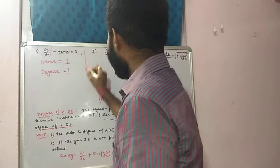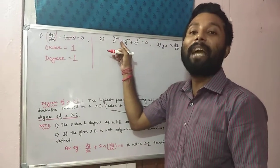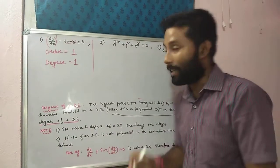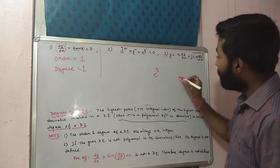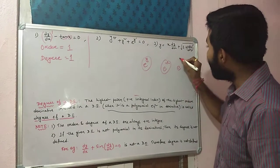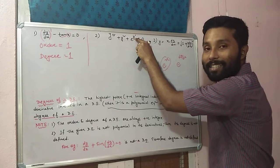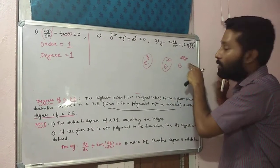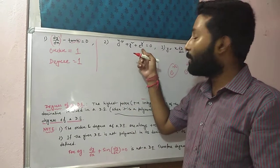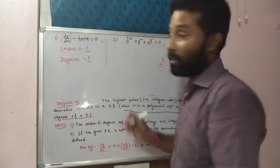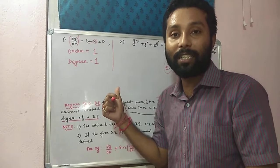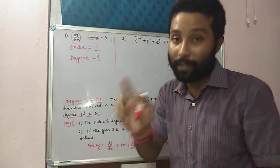Let us take the next question: y''' + y² + e^(y') = 0. y triple dash means three times differentiation kiya gaya hai. e to the power y, e to the power x — these are standard exponential terms. Lekin agar e ka power phir se differentiation form mein rahega — y dash means dy/dx — toh degree is undefined. That means this is not a polynomial in its derivative. Pehle order find out kar lete hain. Ek differential equation se hamesha order find out kar sakte ho, lekin degree find out karne ke liye, the differential equation must be polynomial in its derivative.